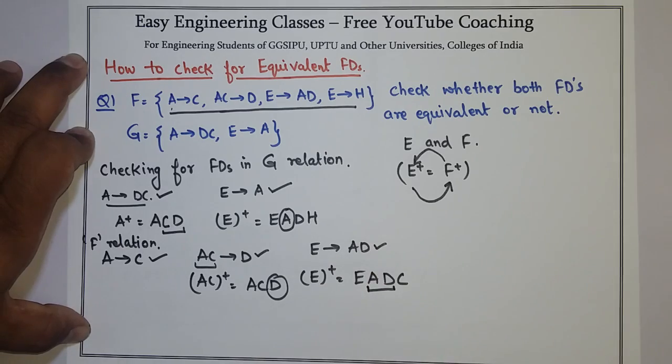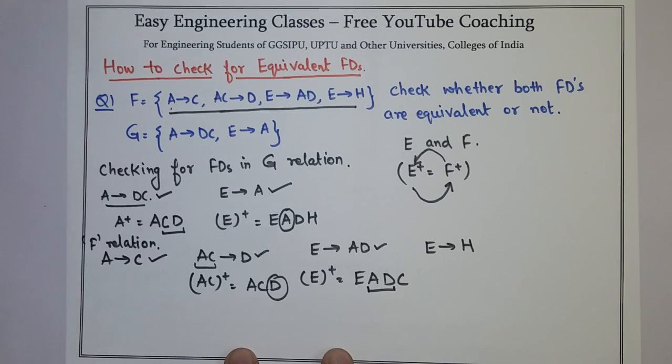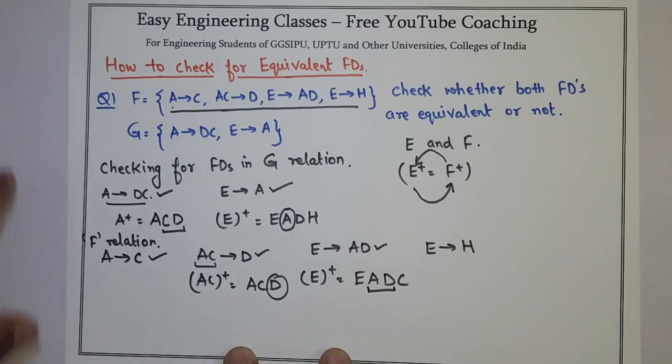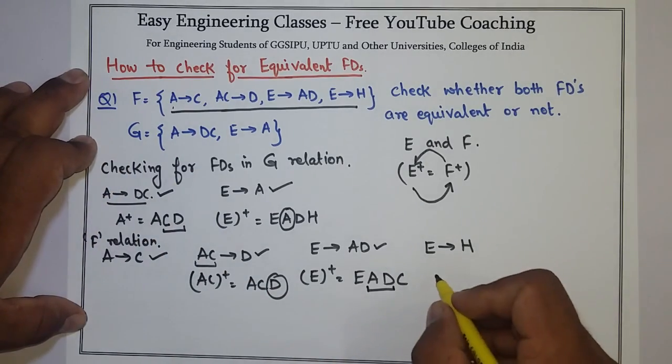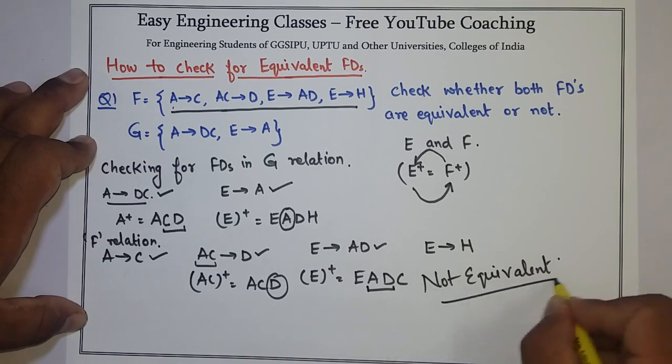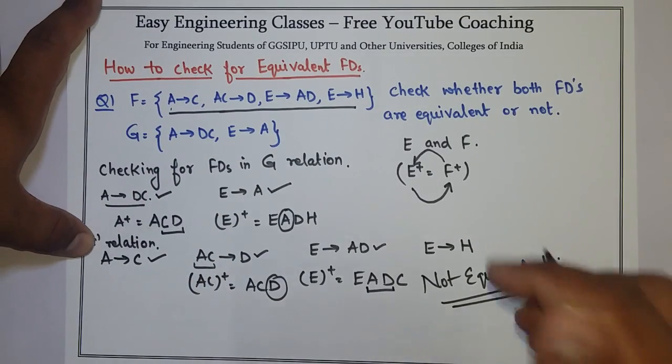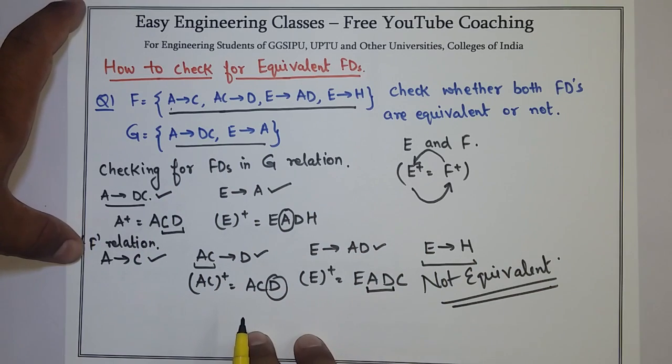The last is E determines H. Now if I see that there is no term that is having a relation of H with respect to G, so these are not equivalent. I cannot get an FD E determines H from these given set of FDs in G. So F and G are not equivalent.